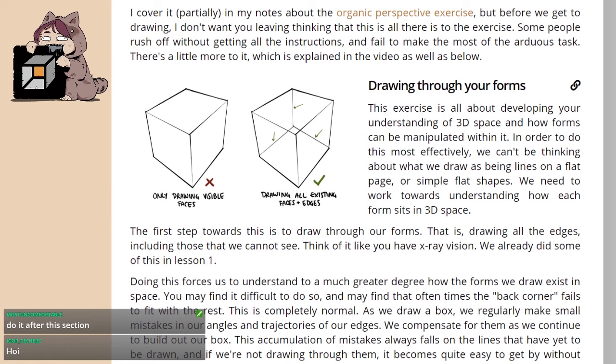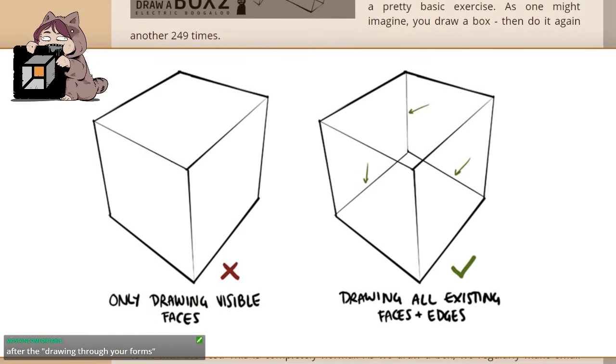The first step towards this is to draw through our forms - that is, drawing all the edges, including those that we cannot see. Think of it like you have x-ray vision. We already did some of this in Lesson 1.